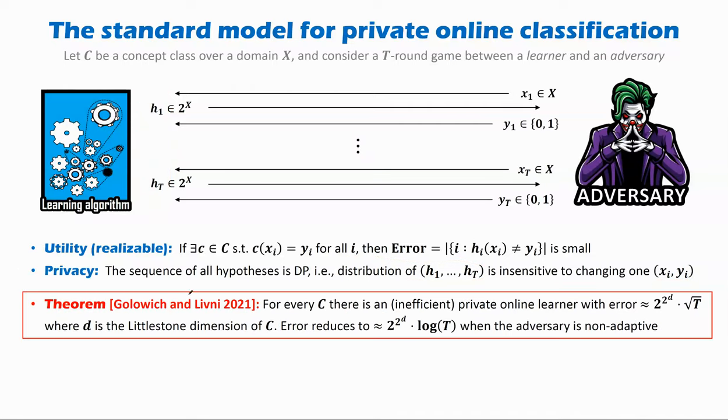In this model, Golowich and Livni showed that for any class C, there exists a not necessarily efficient private online learner with error at most 2^(2^d) · √T, where d is the Littlestone dimension of the class C. Furthermore, this √T can be improved to log T whenever the adversary is non-adaptive. But in this talk, we consider the adversary to be adaptive.